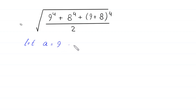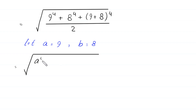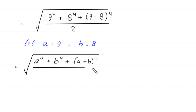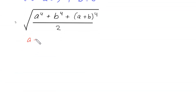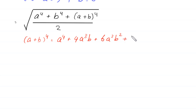Now we suppose that a is equal to 9 and b is equal to 8. So this expression becomes square root of a to the power 4 plus b to the power 4 plus a plus b whole to the power 4, divided by 2. Using the algebraic identity: a plus b whole to the power 4 equals a to the power 4 plus 4a cubed b plus 6a squared b squared plus 4ab cubed plus b to the power 4.